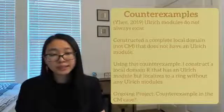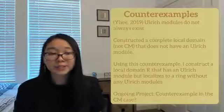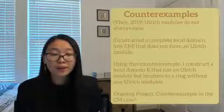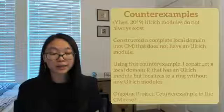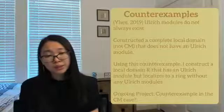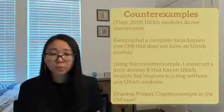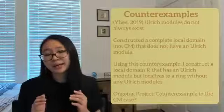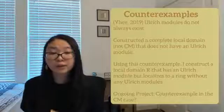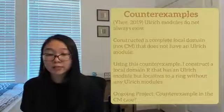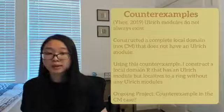Using this construction, I was also able to construct a local domain R that has an Ulrich module, but localizes to a ring without any Ulrich modules. One downside is that my counterexample is not Cohen-Macaulay. An ongoing project that I'm working on is finding counterexamples in the Cohen-Macaulay case.